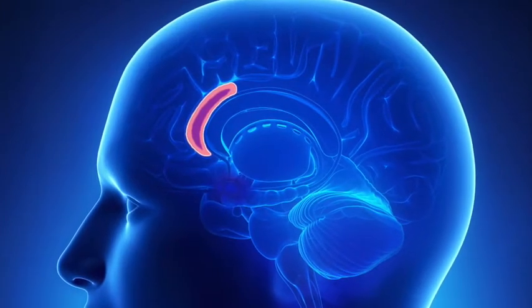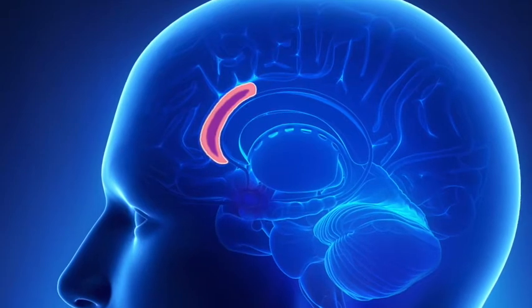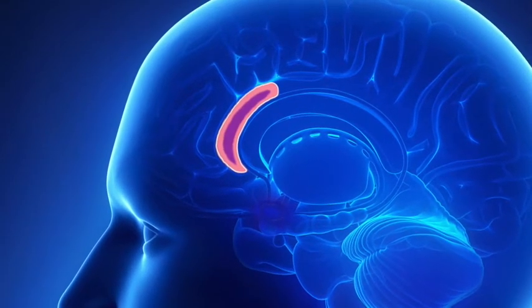Acting as a sort of fulcrum between our emotional limbic system and the logical prefrontal cortex is an area of our brain known as the anterior cingulate.